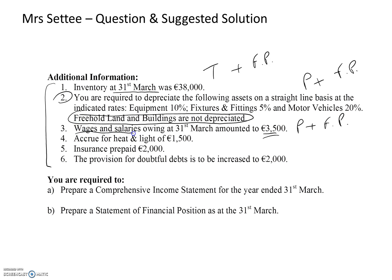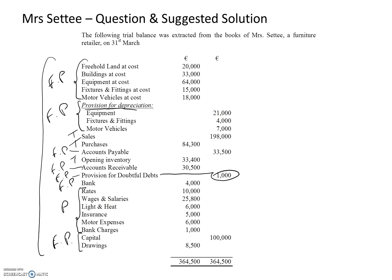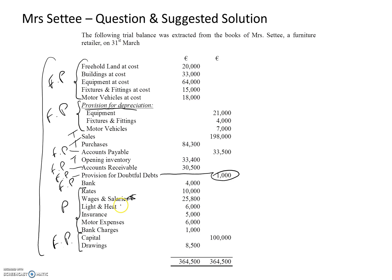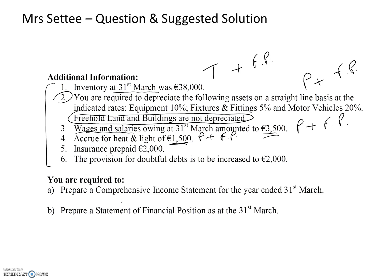It might be worthwhile reminding ourselves about this adjustment — on wages and salaries we'll put a little asterisk so that when we come to that expense we remember it has to be adjusted. Continuing on, there is an accrual for light and heat — again that'll be an adjustment in the profit and loss account and will appear in the statement of financial position. I'll put a little asterisk on the light and heat to remind me about that.